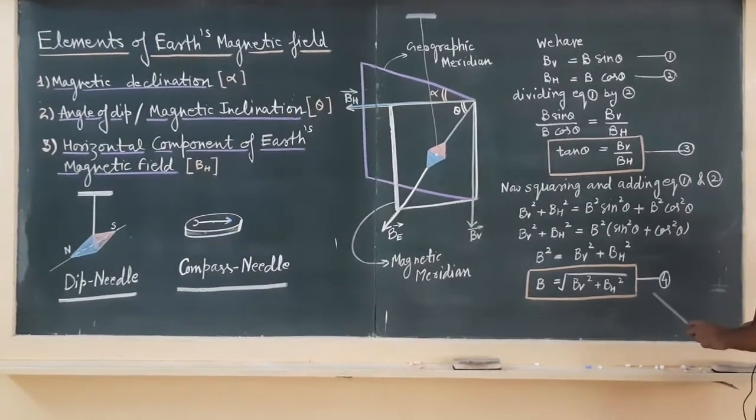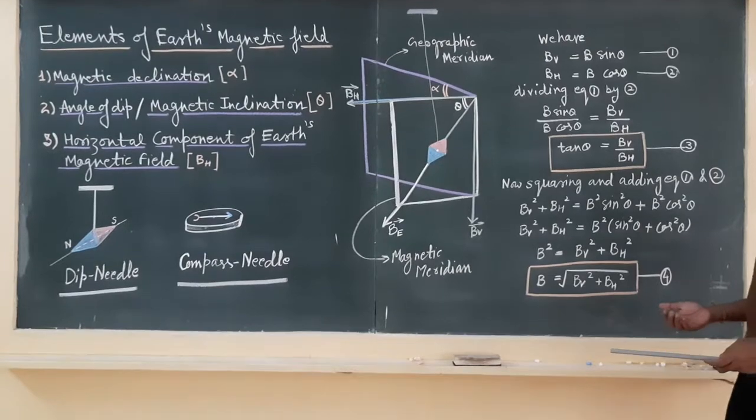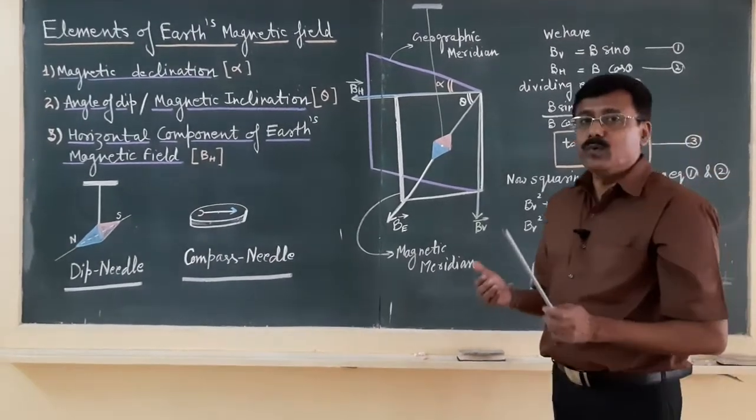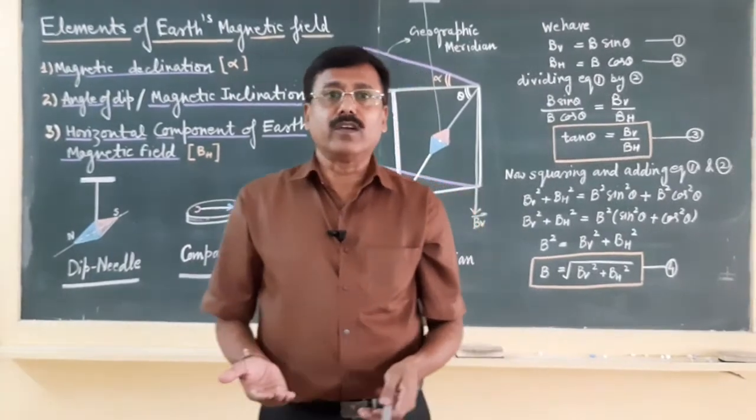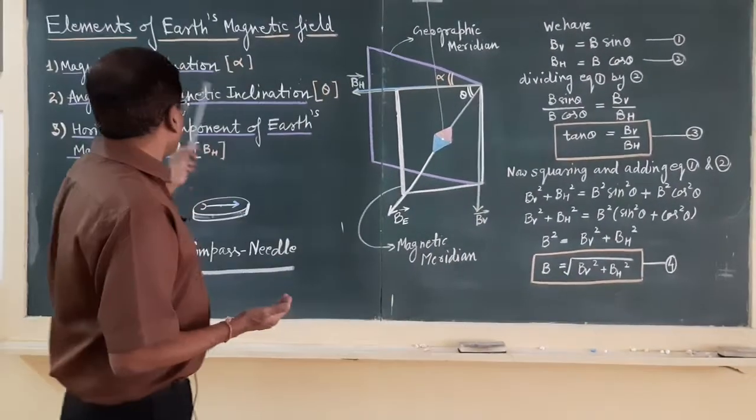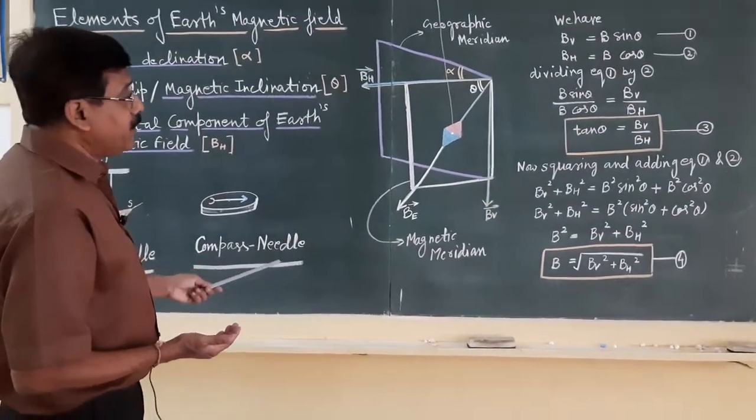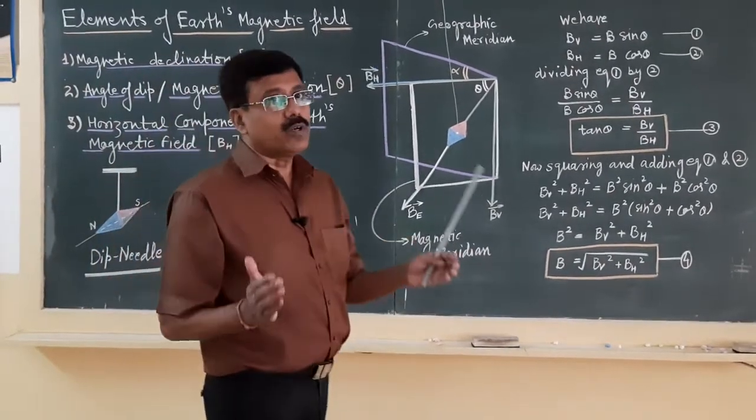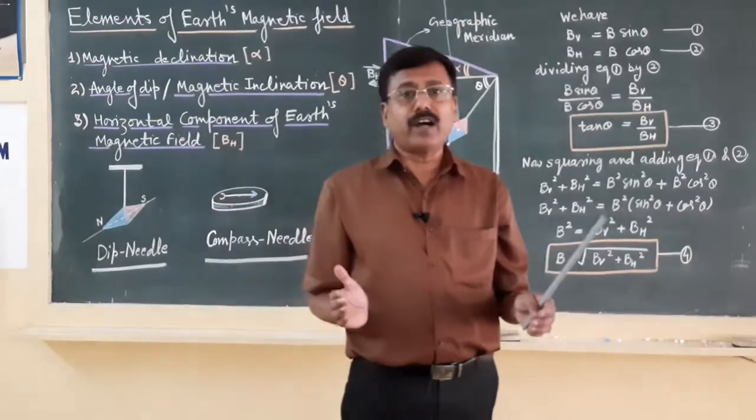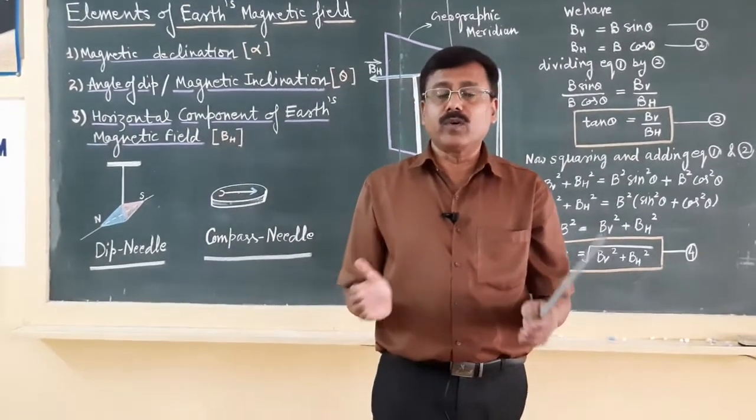So equation 3 and 4 are very important in the sense, if two terms are known, you can find out the value of third one. So this is about elements of the earth's magnetic field, because we can come to know about the total magnetic field intensity of the earth at any place over the globe.